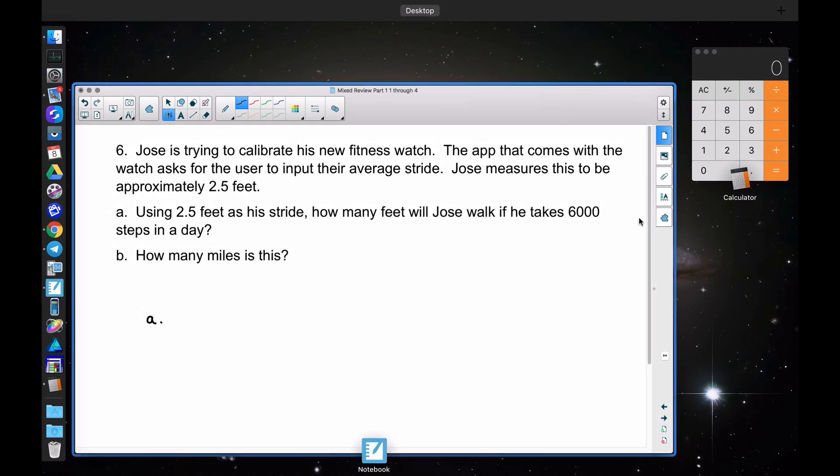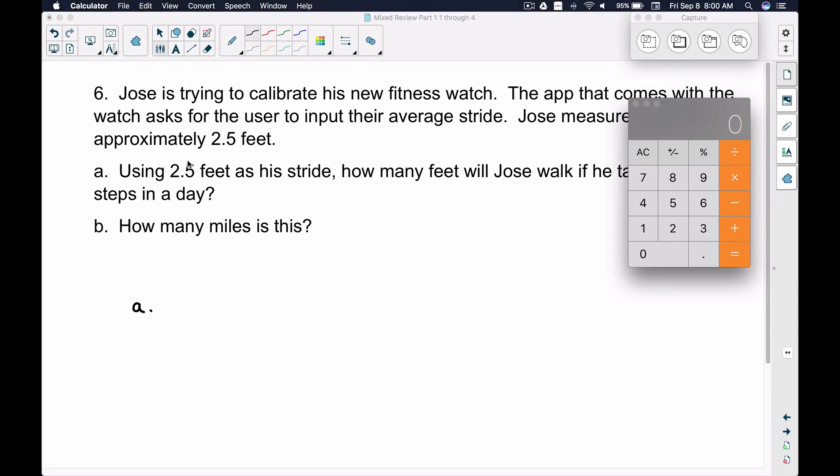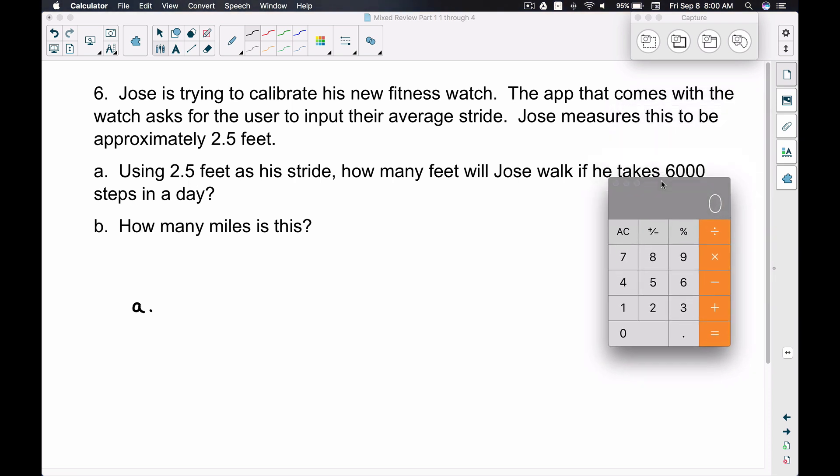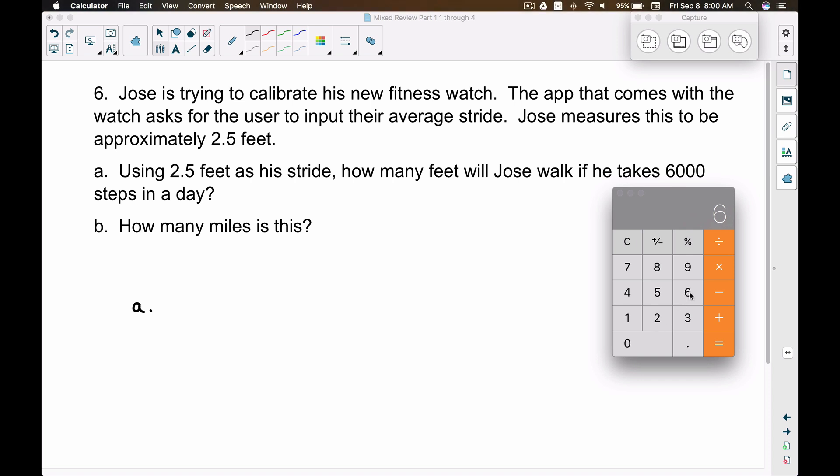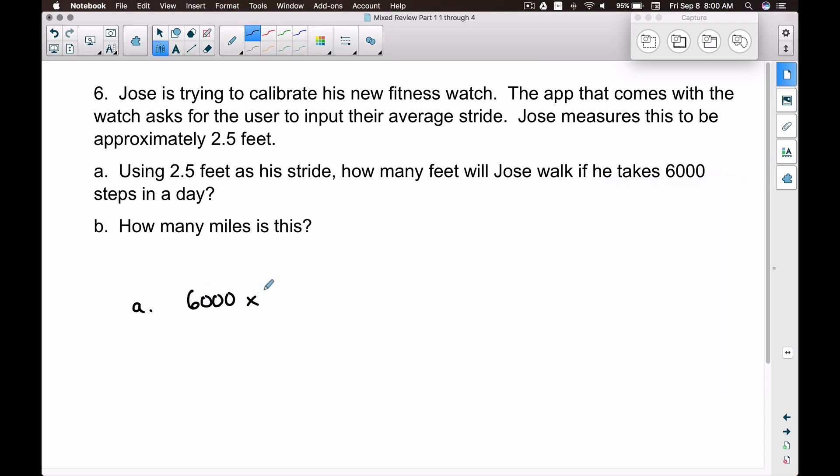Since we can use the calculator on the ATI's math test, we can just take, okay, this is how much is going to be in one step. Two and a half feet is going to be one step since he's taking 6,000 steps. We can just multiply 6,000. And we multiply that by two and a half. So therefore we get 15,000 feet. And again there all I did was I took the 6,000 steps. And he's walking two and a half feet for each step. And that gives us 15,000 feet. So nothing crazy there as long as you understand to multiply there.